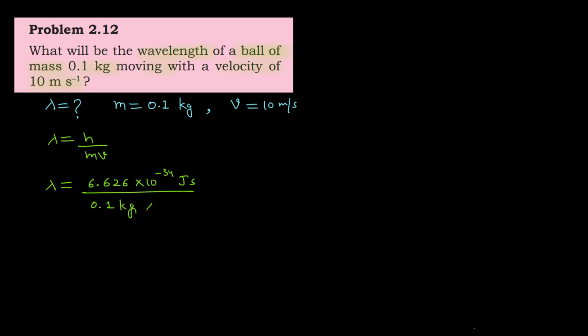Now here the mass is 0.1 kg equals 10 to the power minus 34. The numerical value and the unit are separated.